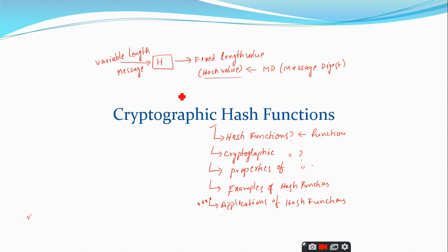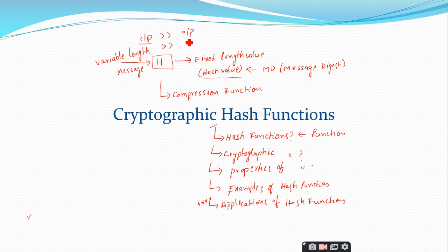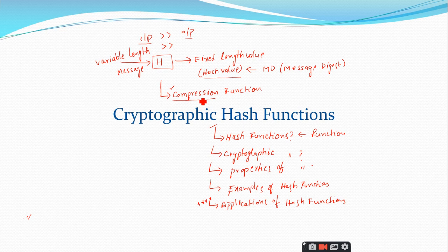Every hash function makes use of one particular function called the compression function. The variable length message will be larger than the fixed hash value output — meaning the input is larger than the output. In order to convert the larger input to the smaller output, we need a technique called compression, where we compress a large number of bits into a fixed number of bits. That is why all cryptographic functions involve the iterative use of a compression function.